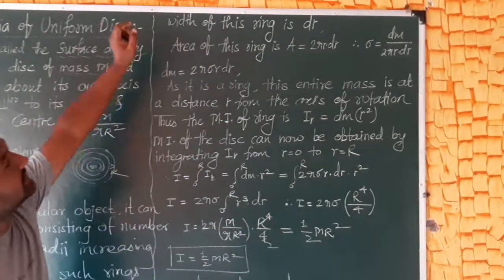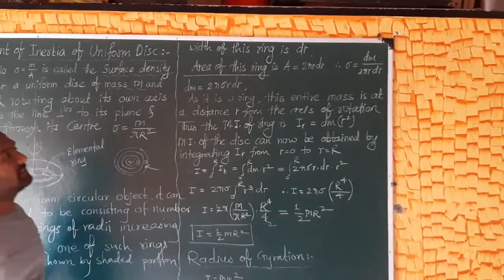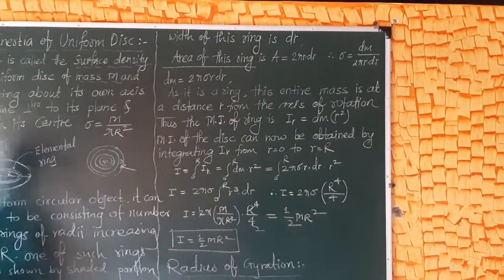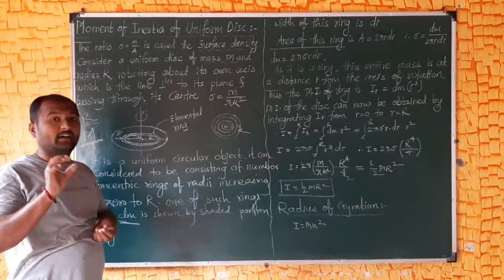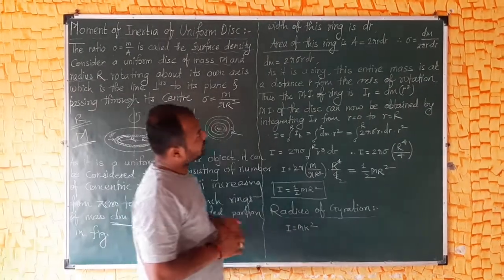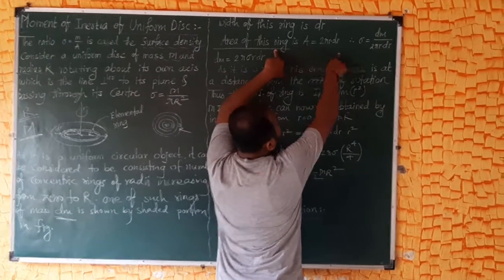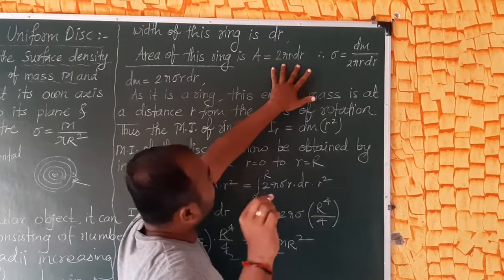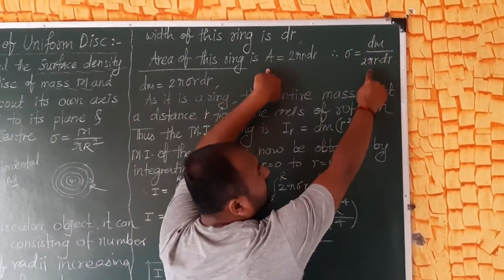One of such rings of mass dm is shown by a shaded portion in the figure. The width of this ring is dr. So the area of this ring is equal to 2 pi r into dr. Sigma is equal to mass per unit area.